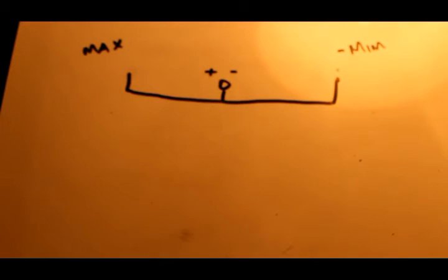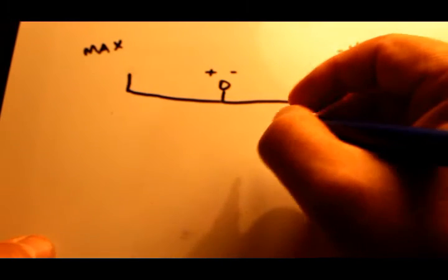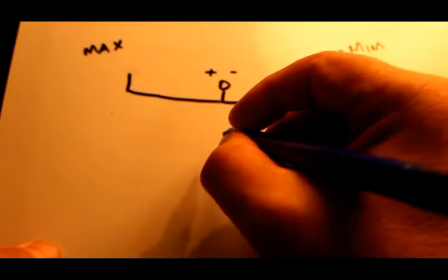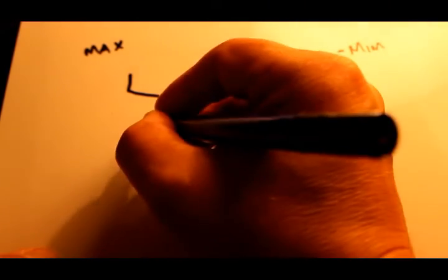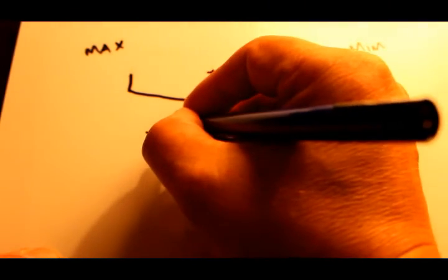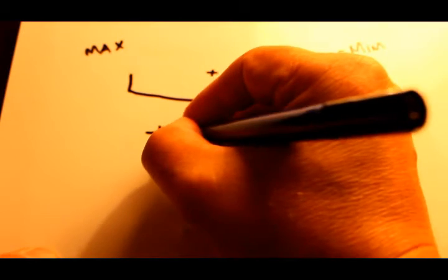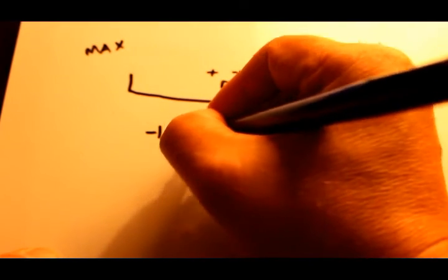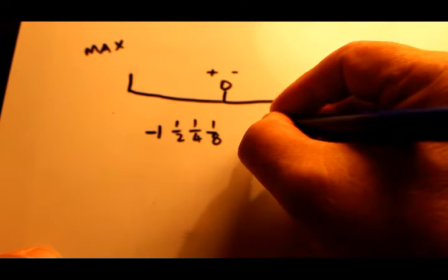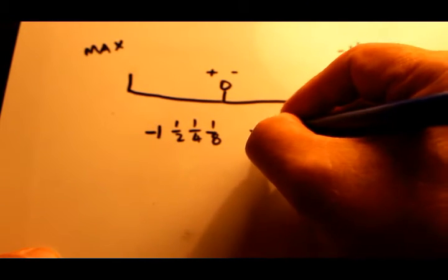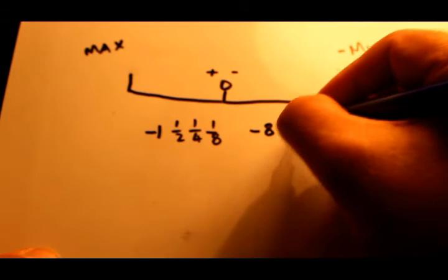So what we know then is that we have in our 8-bit system numbers that represent the mantissa. So we've got minus one, and then we've got a half and a quarter and an eighth. This is in a four-bit system. And then we know in the exponent we've got a minus eight, four, a two, and a one.